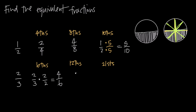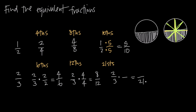What about twelfths? Two over three times what gives me x over twelve? Twelve divided by three is four, so I multiply both numerator and denominator by four. Two times four gives me eight, so eight over twelve is equal to two over three. Even with a larger number like twenty-one: twenty-one divided by three is seven, so two times seven is fourteen. Fourteen over twenty-one is equal to two over three.